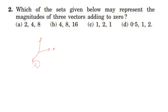That means the third vector should be greater than or equal to the difference of two vectors and less than or equal to the addition of two vectors. The resultant of two vectors has a minimum value equal to their difference and a maximum value equal to their sum. If the third vector lies between these, the three vectors will be in equilibrium.